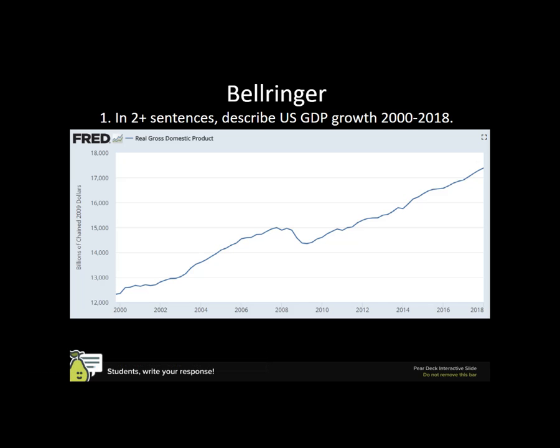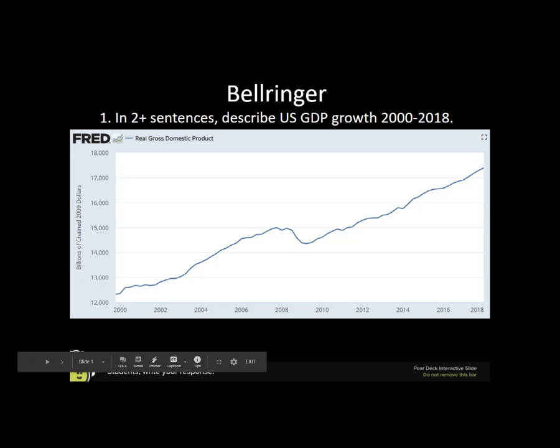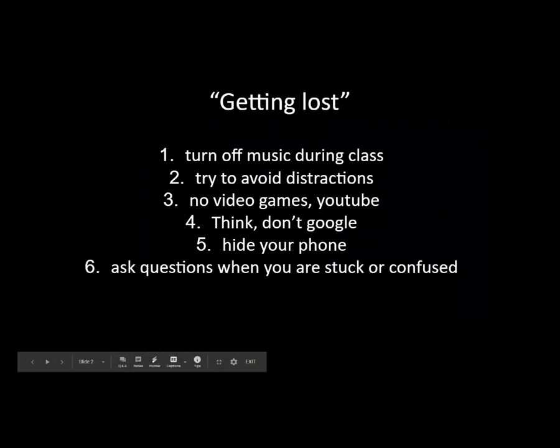We see it starts out at 12 trillion dollars — a thousand billions is a trillion — and then we get to 17 and a half trillion. That's tremendous growth in this 20-year period. We do see two spots of negative growth: one from 2007 to 2009, and one in 2001. Notice that one is worse than the other.